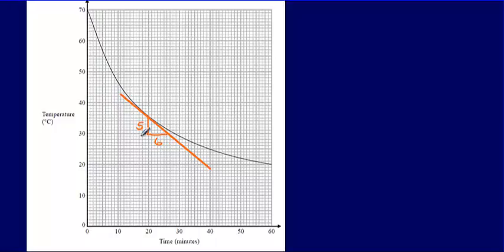So when x is increased by 6, y has decreased by 5. So after 6 minutes passes, the temperature is decreasing by 5 degrees centigrade.